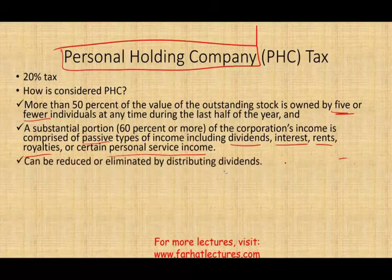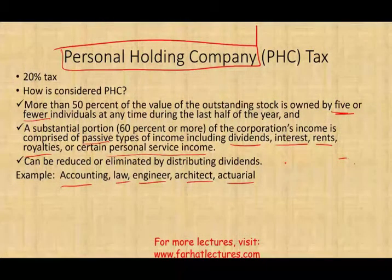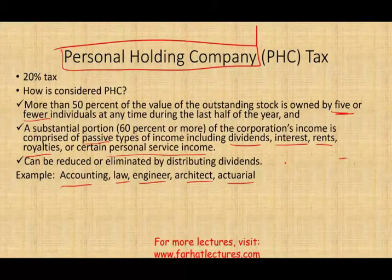So the government says: if 60% or more of your income is coming from passive activity — interest, dividends, rent, royalties — or from personal service income where you are providing the service, you are considered a personal holding company. Examples include accounting firms, law firms, engineers, architects, and actuarial firms. This tax can also be eliminated if you distribute the dividend, because the IRS wants you to pay it out rather than keeping it in the company.